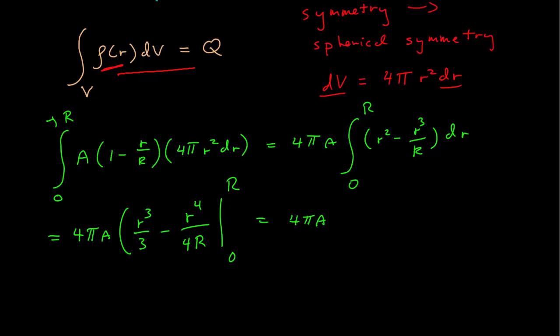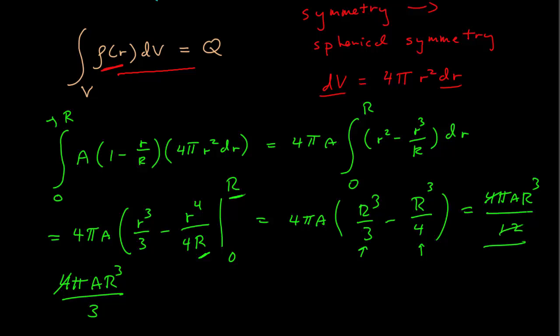4πA, and then zeroes are just zeroes, so when R is substituted in, R³/3 minus R⁴ divided by R in the denominator gives us R³/4. This is four twelfths, this is three twelfths, so the difference is one twelfth, and we get 4πAR³/12. So this is equal to the total charge, we can cancel, that gives us three in the denominator. This equals the total charge, so now we found our constant A in terms of the total charge, which is 3Q/(πR³).